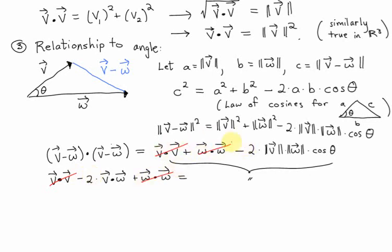Now, what do I have left? On the left-hand side, I have negative 2 times V dot W. And on the right, I have negative 2 times the length of V times the length of W times cosine of theta, the angle between them.